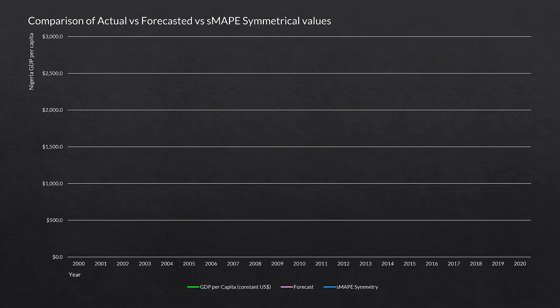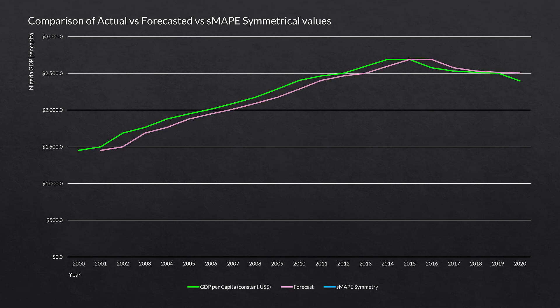Here we will graph three lines: the actual values in green, the forecasted values in pink, and the SMAPE symmetrical values in blue. The green line is the GDP per capita — our actual values. The pink line is our forecasted values. The SMAPE value sits right down the middle: at each point in time, once we have forecast values, the blue SMAPE line is right between the actual and the forecast, regardless of which is on top. It always goes right down the middle.